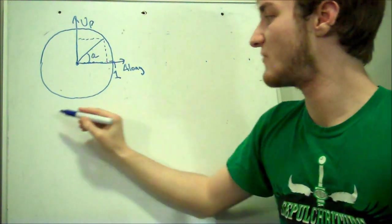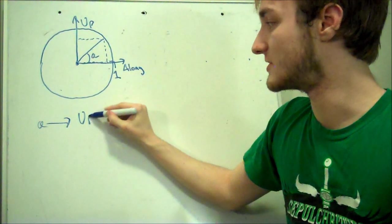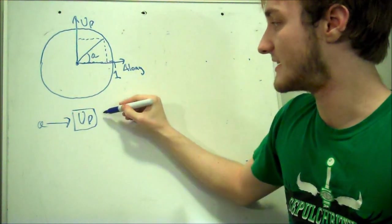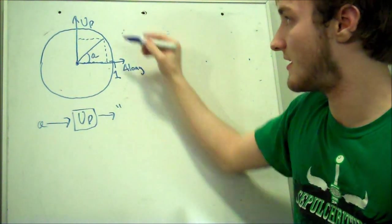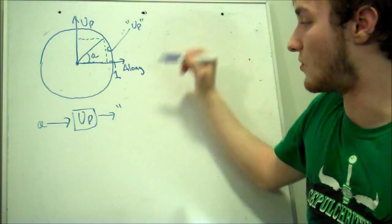Pretty easy. If we put A into this machine, that I'm going to call the up machine, it's going to spit out this length, which I'm going to call up.